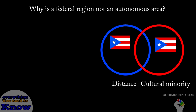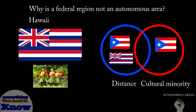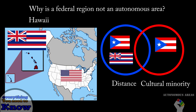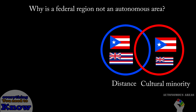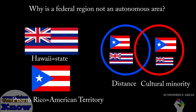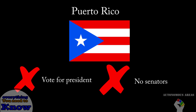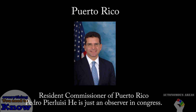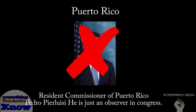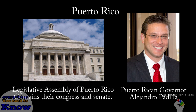Now some of you might be asking why Hawaii is not an autonomous area. They have their own Polynesian culture and are even further geographically than Puerto Rico. But the one difference between these two is that Hawaii is an American state and Puerto Rico is an American territory. Puerto Ricans cannot vote for president and have no senators, and really only have one voice in congress who can't even vote on bills. Instead, they have their own House of Representatives and Senate which creates new laws that will be implemented by the governor.